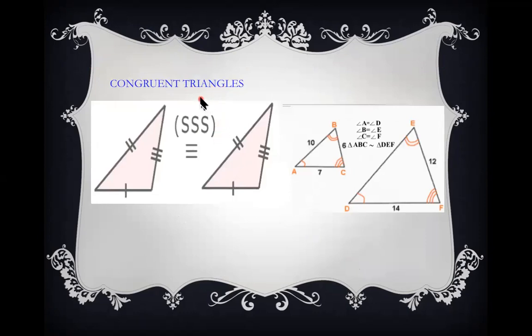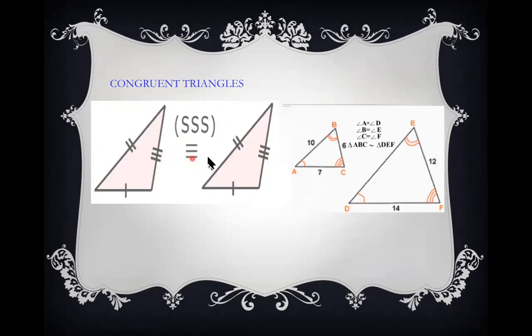The last case of congruency is when all three sides of one triangle correspond and are equal to the three sides of the second triangle. No angles need to be explicitly stated — the reason is Side, Side, Side (SSS).